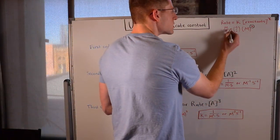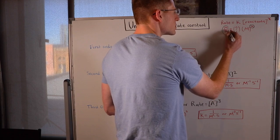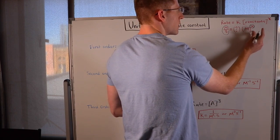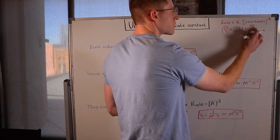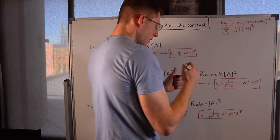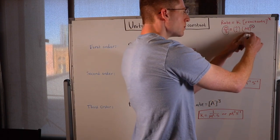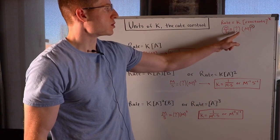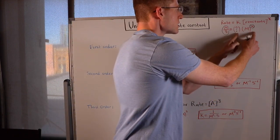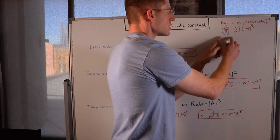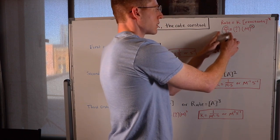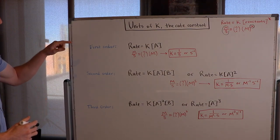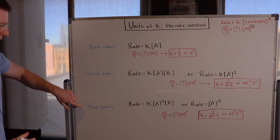We know the rate is always going to be molarity per second. The reactants however are going to be raised to maybe the first power, the second power, the third power — we may have molarity cubed, molarity to the second power — and based on that overall order we're going to have to adjust K to make this molarity per second. I've got three situations here: an overall order of first, second, and third.